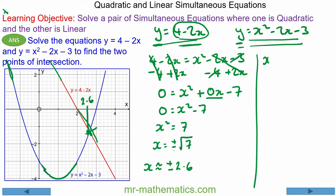If x is approximately positive 2.6, we can put this value back into the linear equation. We could also put it back in the quadratic equation, it's just easier to use the linear one. So y is approximately 4 minus 2 lots of x, which is 2.6. Y is approximately negative 1.3, and that is this point here.